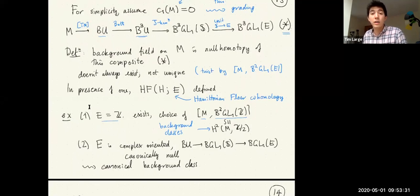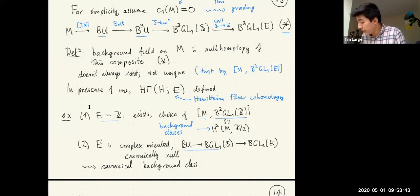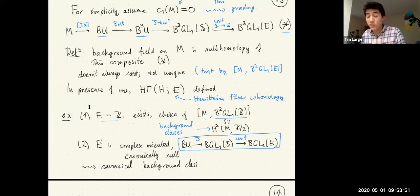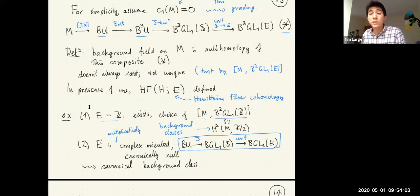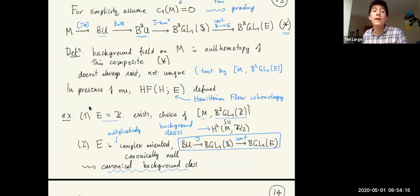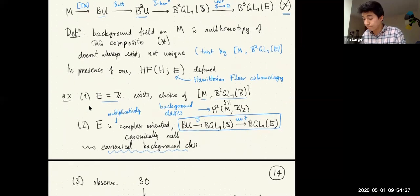If E is one of the complex-oriented theories, then the map from BU to BGL_1(S) to BGL_1(E) is canonically null — there's just a given null homotopy. In particular, if E is multiplicatively complex-oriented, this null homotopy of BU to BGL_1(E) deloops, and delooping it twice gives a canonical background class. So for any complex-oriented cohomology theory there is a canonical version of Hamiltonian Floer cohomology — something which is extremely important in Abouzaid and Blumberg's work applying Morava K-theory.